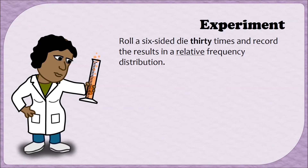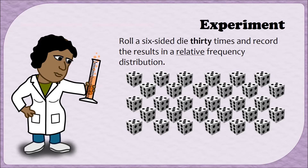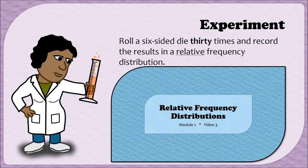Let's start out with an experiment. Find a six-sided die and roll it 30 times, then record your results in a relative frequency distribution. We're going to be discussing the results of your relative frequency distribution, so I would encourage you to pause this video and conduct this experiment now. If you need help making a relative frequency distribution, you can check out video 3 from Module 2.